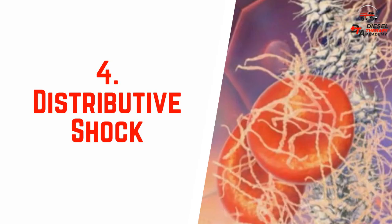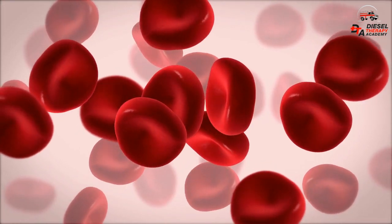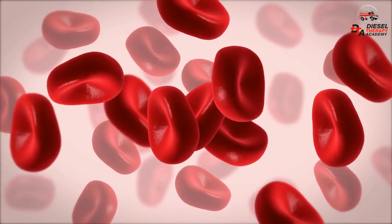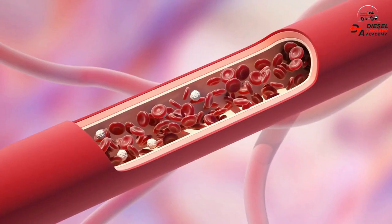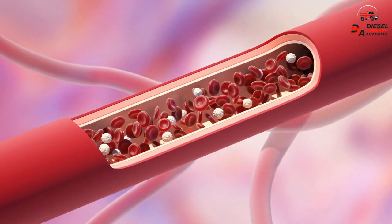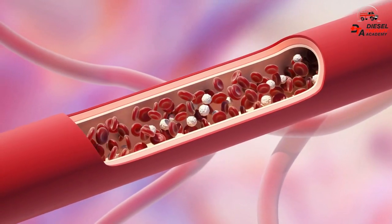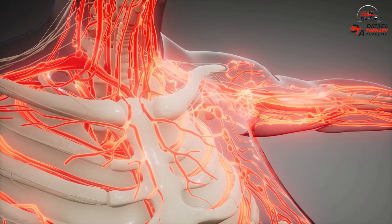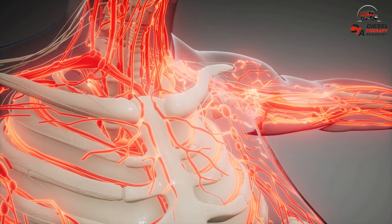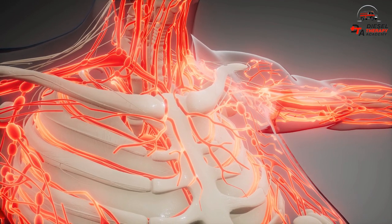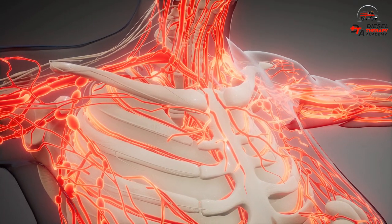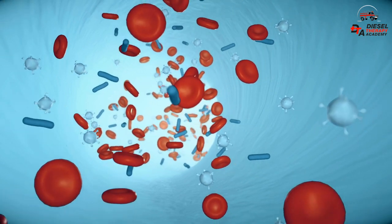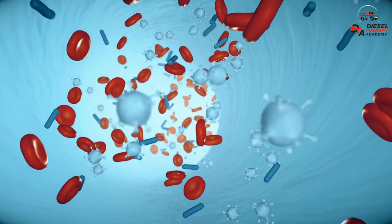4. Distributive shock. Distributive shock is caused by excessive vasodilation that reduces blood flow resistance. There is less resistance as the arteries dilate and blood travels too quickly to offload oxygen. Systemic vasodilation leads to decreased blood flow to the brain, heart, and kidneys, causing damage to vital organs. Perfusion and blood transport to the tissues are reduced as a result.